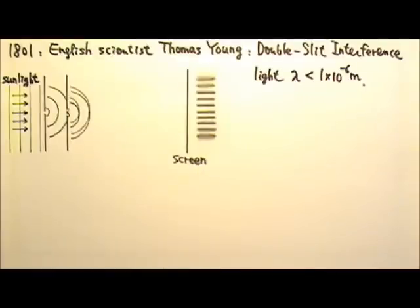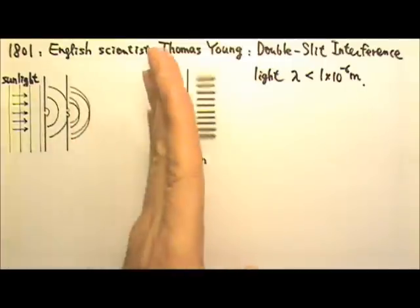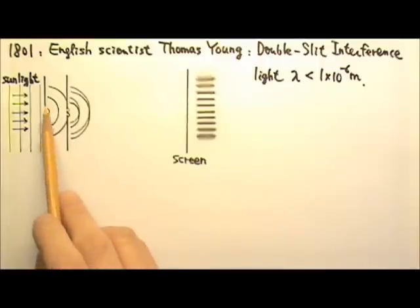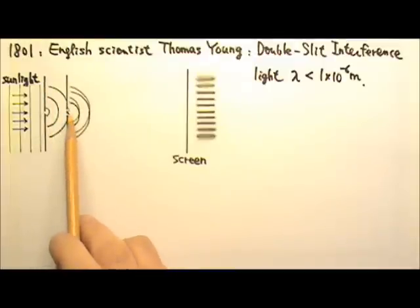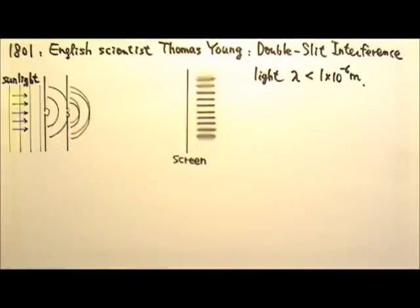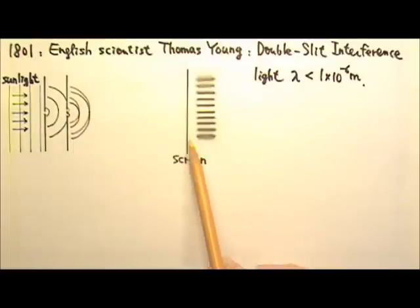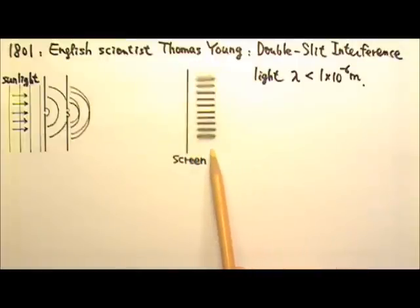Because light rays from the sun are parallel rays, the sunlight comes in as plane waves. After the first slit, we get this circular wavelet. When the wavelet hits the double slit, we get two circular wavelets. And these two wavelets interfere to give us these bright and dark fringes on the screen.